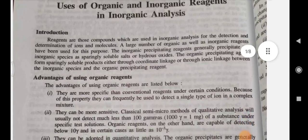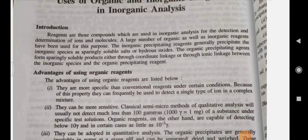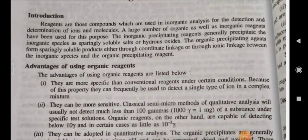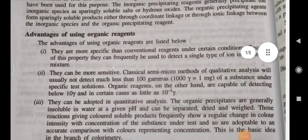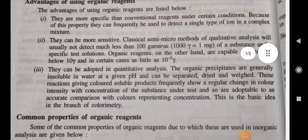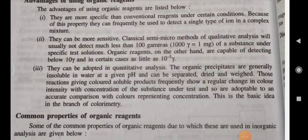Reagents are those compounds which are used in inorganic analysis for the detection and determination of ions and molecules. A large number of organic as well as inorganic reagents have been used for this purpose. Inorganic precipitating reagents generally precipitate the inorganic species as sparingly soluble salts, while organic precipitating agents form sparingly soluble products either through coordinate linkage or through ionic linkage between the inorganic species and organic precipitating reagents.